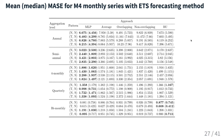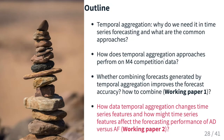We have done similar experiments for quarterly and daily time series, and in both cases we see similar patterns. As we go from higher frequency to lower frequency, the MLP performance improves. However, for horizons very close to the initial time series horizon, bottom-up performs better than the aggregation approaches.